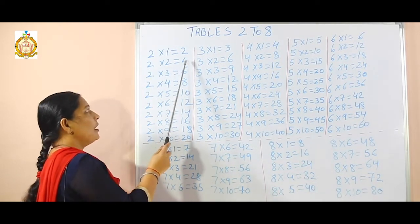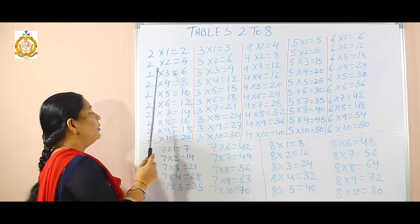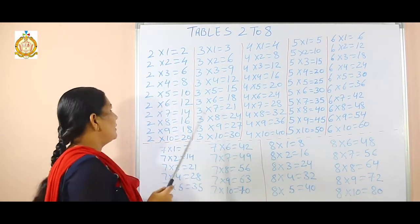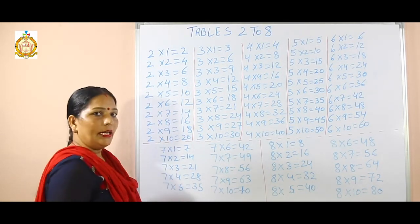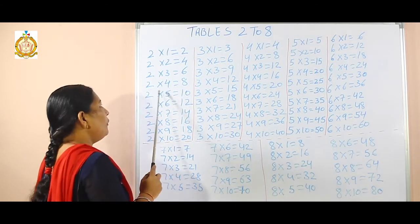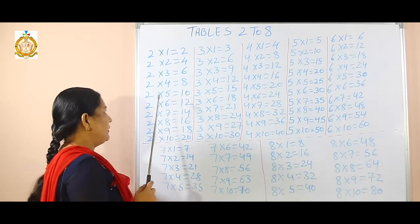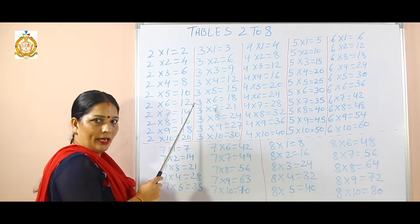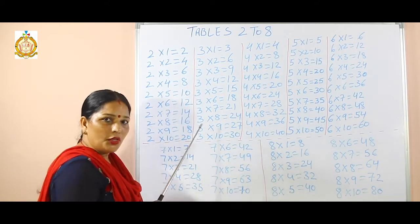2 twos are 4, 2 threes are 6, 2 fours are 8, 2 fives are 10, 2 sixes are 12, 2 sevens are 14.